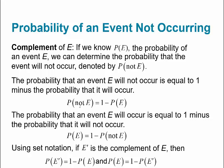The probability that something does not happen equals 1 minus the probability that it will happen. Similarly, the probability that event E will occur equals 1 minus the probability that it will not occur. Using set notation, if E prime is the complement of E, then P(E') = 1 - P(E), and P(E) = 1 - P(E').